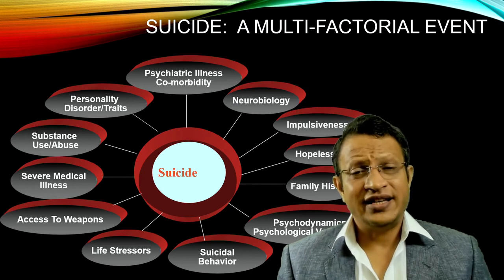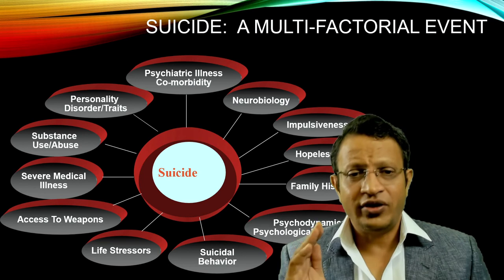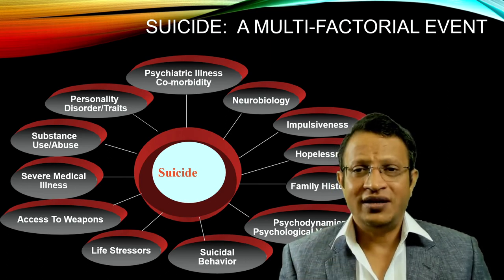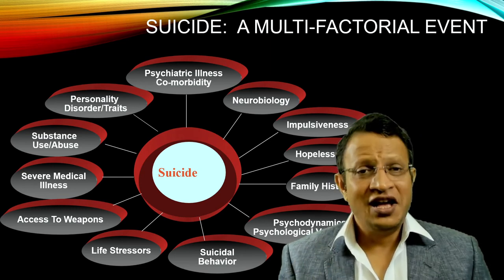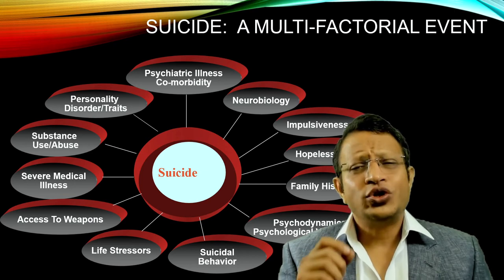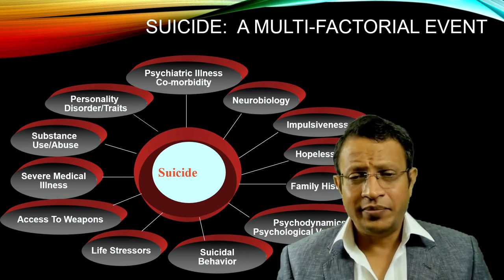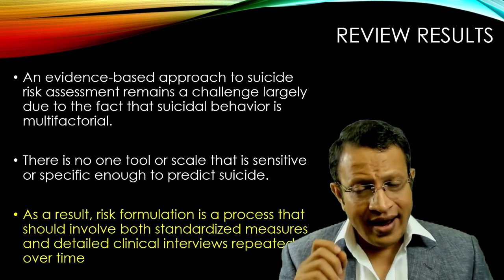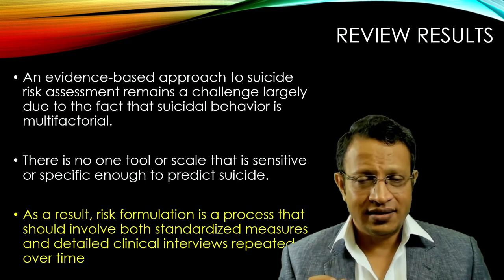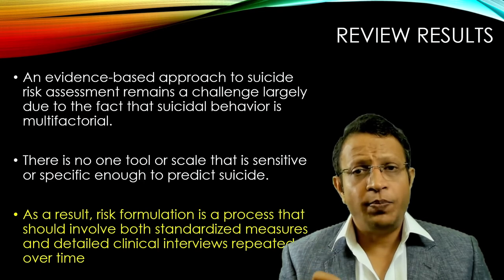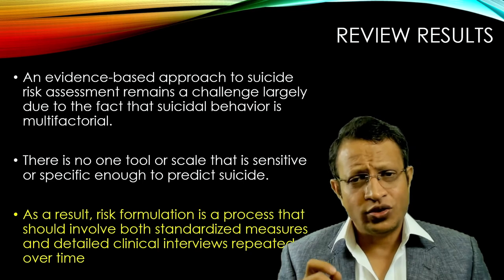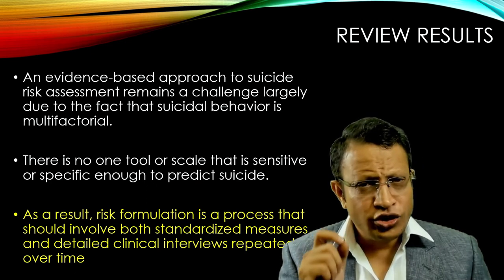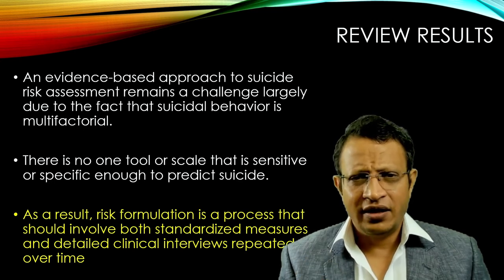Suicide is a multi-factorial event. Multiple stress factors, environmental factors, the individual's own neurobiology, genetics, impulsiveness, hopelessness, family history, psychiatric comorbidity, and physical illness all play a crucial role in attempting suicide and death by suicide. Reviews and meta-analyses of these instruments clearly state that an evidence-based approach to suicide risk assessment remains a challenge, largely because suicidal behavior is multi-factorial and very complex. There is no single tool or scale sensitive or specific enough to predict suicide accurately. Risk formulation should involve both standardized measures using instruments and a clinical interview.